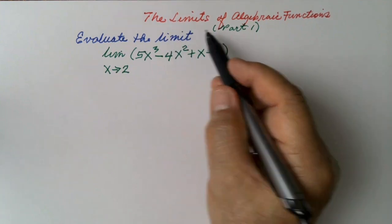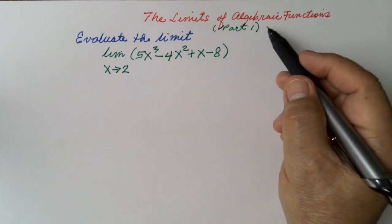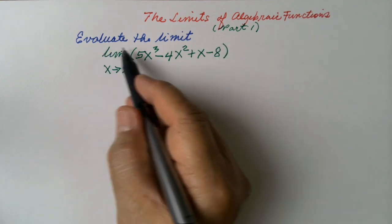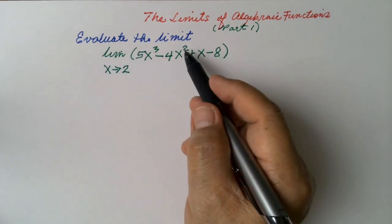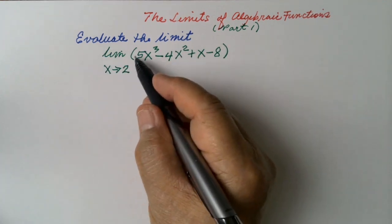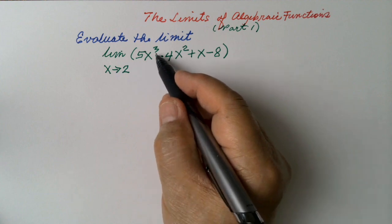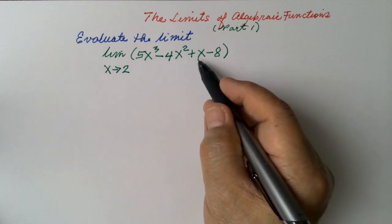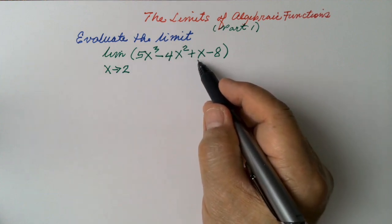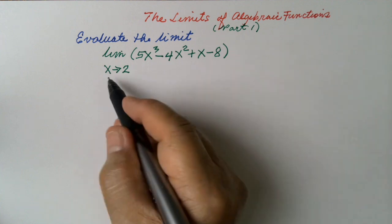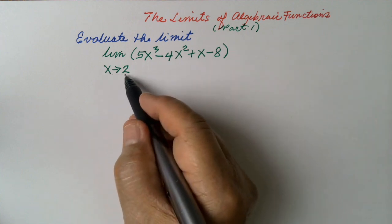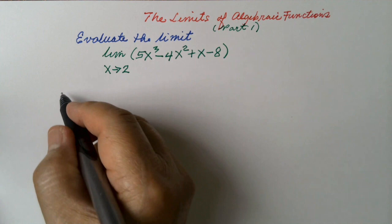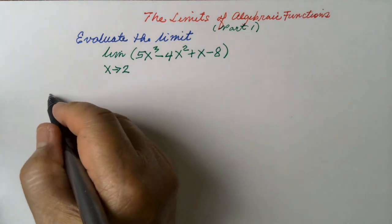The limits of algebraic functions. Evaluate the limit: the limit of 5x cubed minus 4x squared plus x minus 8 as x approaches 2.